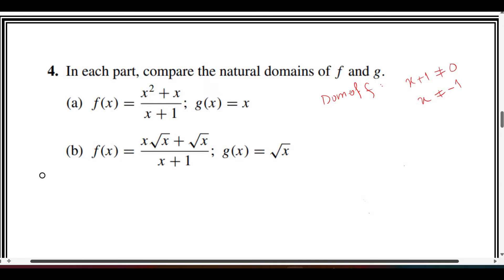So the domain of f is all x values except x equals negative 1, while the domain of g is the whole real number line, from negative infinity to positive infinity.